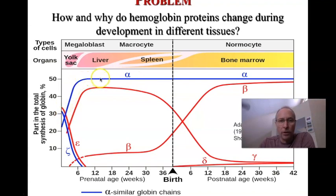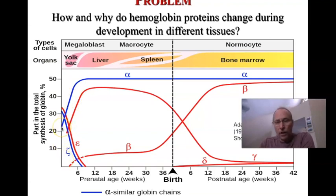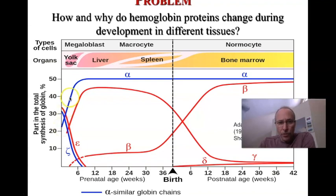The blue curve is the alpha curve. Adult hemoglobin has two alpha chains and two beta chains. Right off the bat, very early in development, you start to produce hemoglobin — even before you have a heart — and that hemoglobin is about 23-25% alpha globin at the start. The alpha globin gets ramped up over time, reaching 50% by about 10 weeks, and from that point on, all hemoglobin in the body is half alpha.